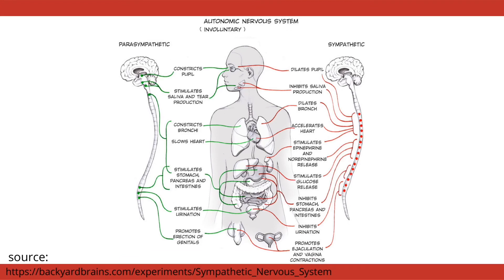In the parasympathetic division, when you are not having any kind of stress and are just relaxing, watching TV, and eating food, your pupils constrict, saliva and tear production is stimulated, there is constriction of bronchi, your heart slows down, and your stomach, pancreas, and intestines are stimulated — which is why you feel more hungry when you are doing nothing. There is also stimulation of urination and promotion of genital reaction. These conditions occur when you are relaxing and not in any emergency situation.